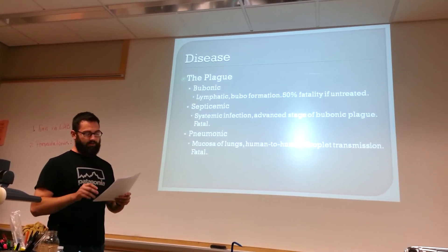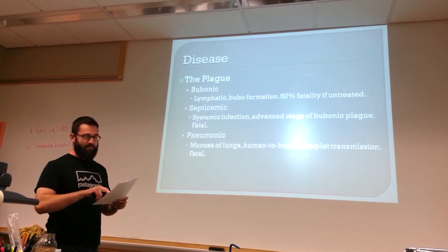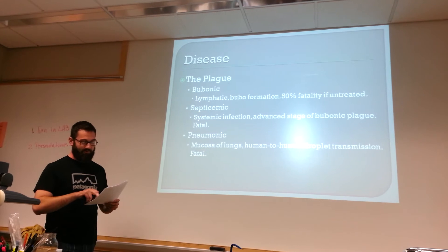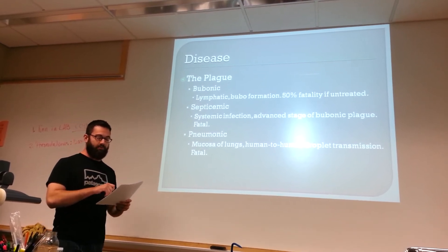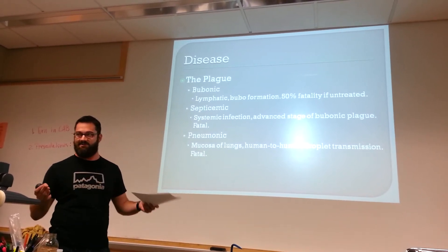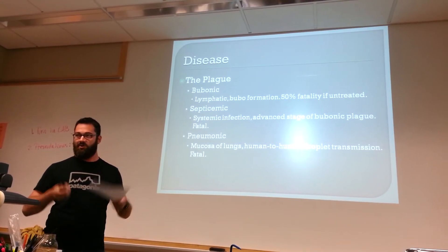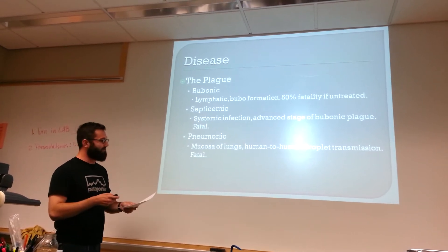Septicemic plague also manifests in hepatosplenomegaly — meaning the liver and spleen become grossly inflamed and covered in abscesses, which burst inside of your abdomen.